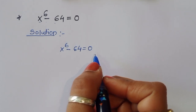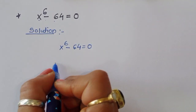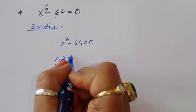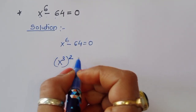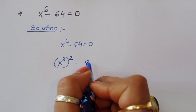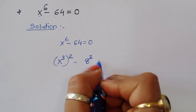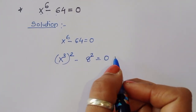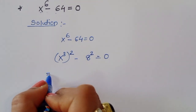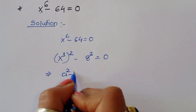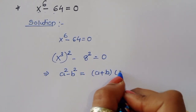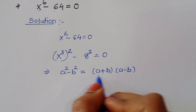We can convert this into square form. If we convert, it becomes x power 3, quantity squared, minus 8 squared — since 8 squared is 64 — is equal to 0. Now this is the form of a squared minus b squared, and we know that a squared minus b squared equals a plus b times a minus b. This is the formula.